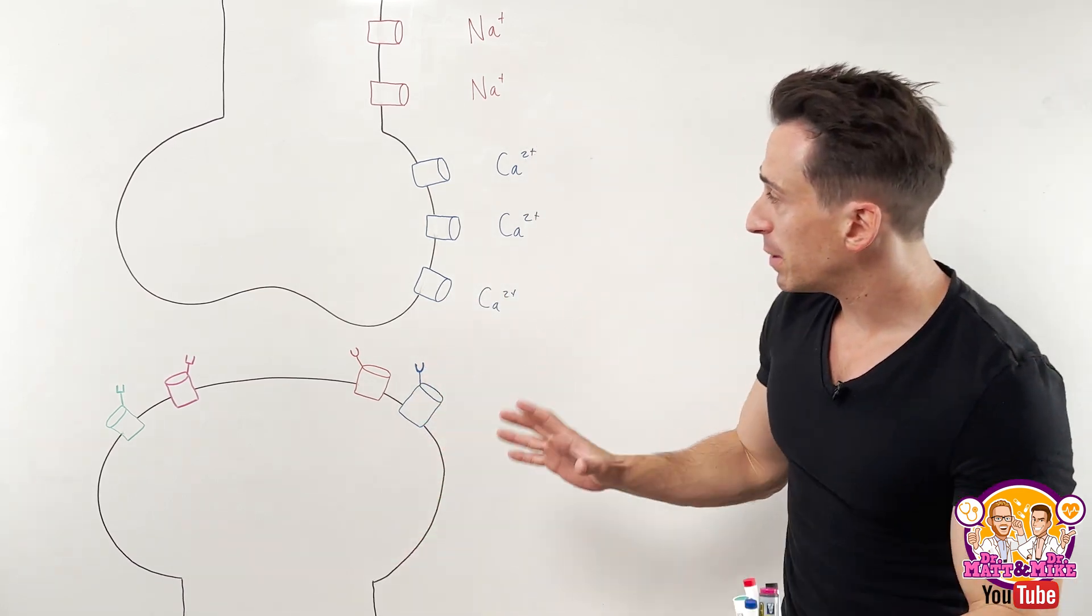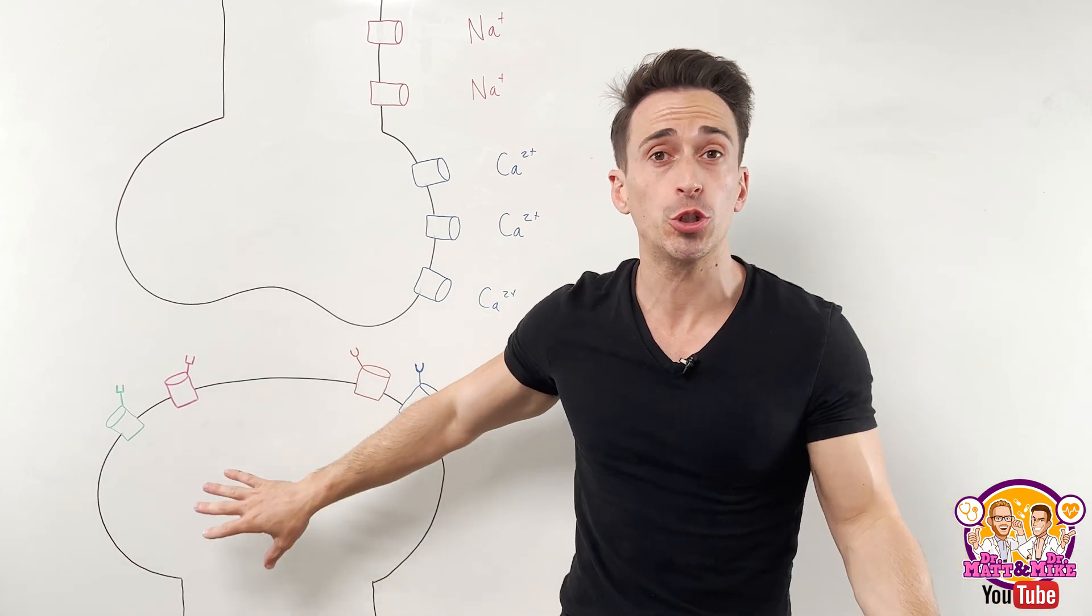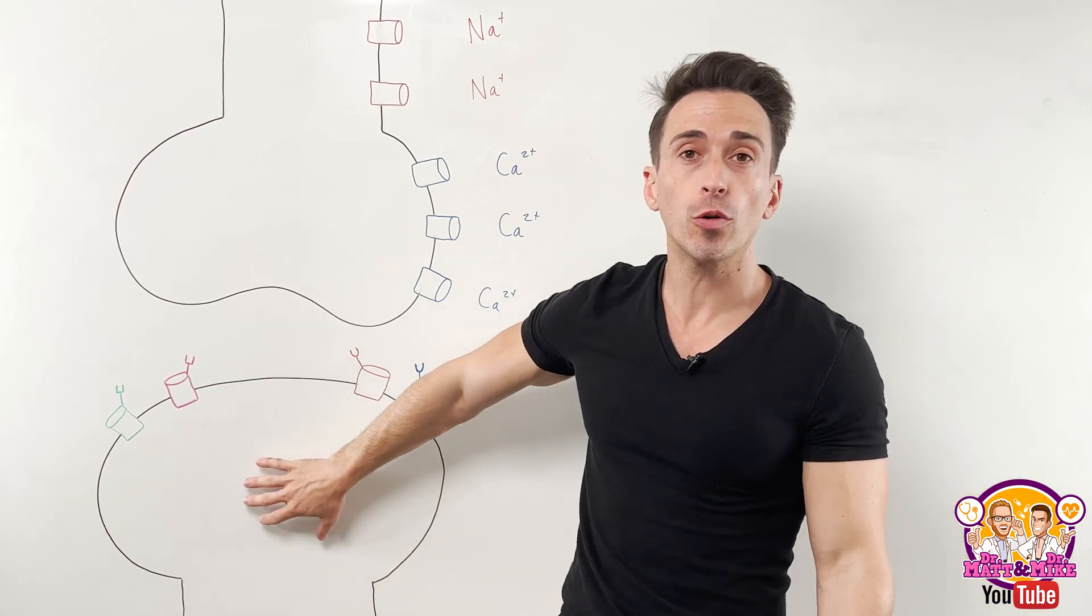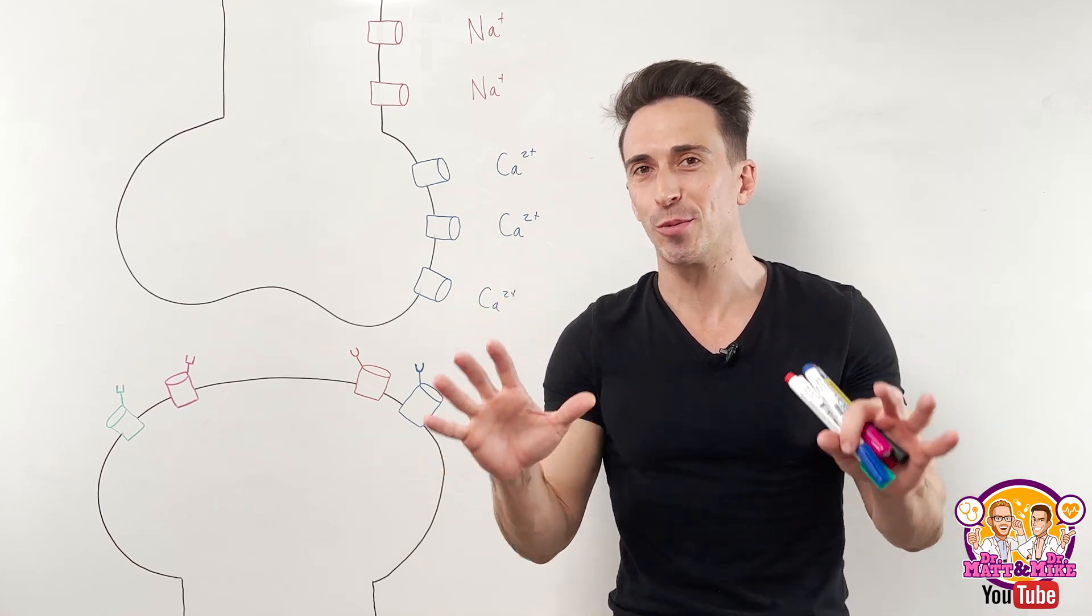So briefly, synaptic transmission is when one neuron needs to speak to some sort of excitable tissue. This tissue may be another neuron, it may be a muscle, it may be a gland. They're all different types of excitable tissue.